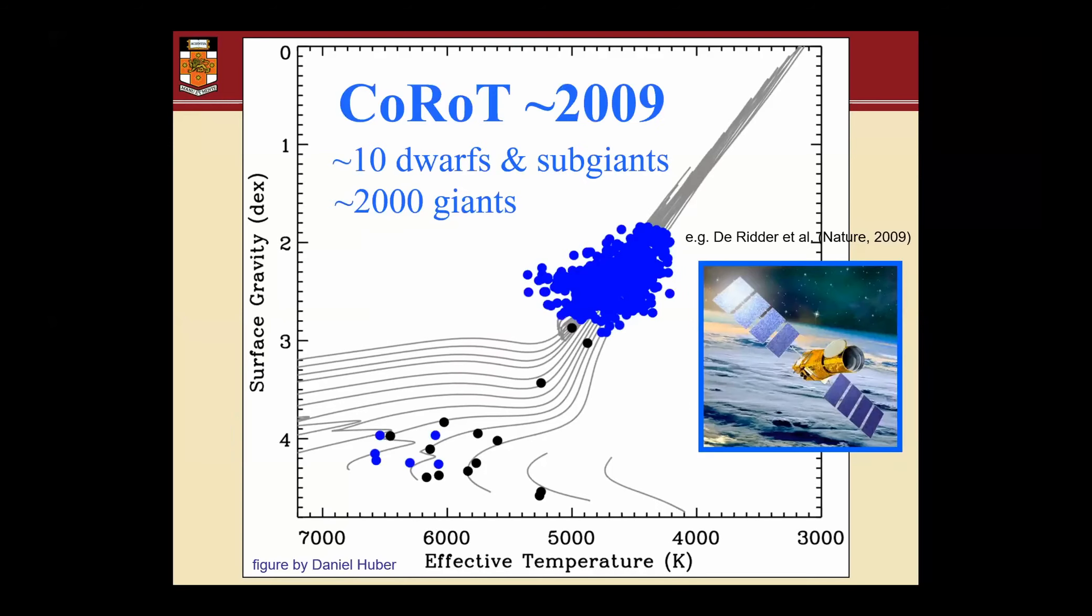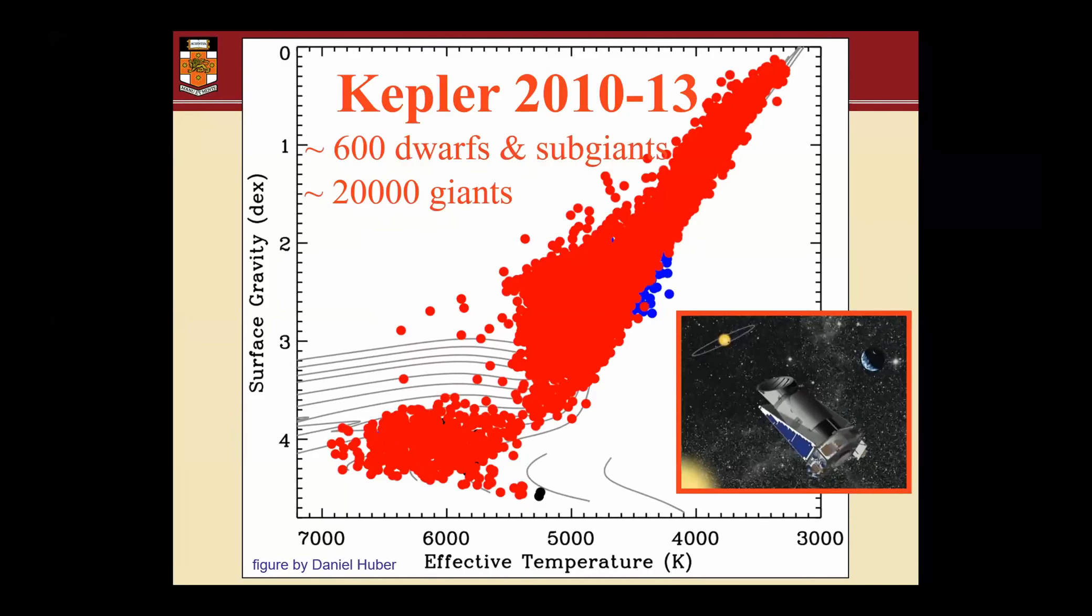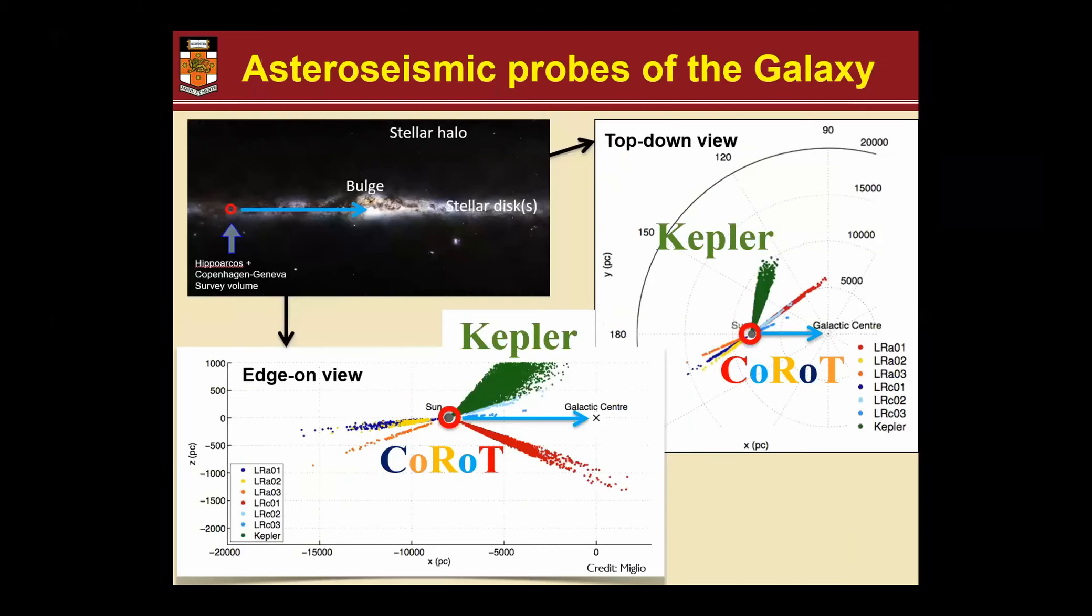Then we got CoRoT and especially Kepler that just filled the whole HR diagram, and in particular red giants - we had from Kepler 20,000 of them. That gave us some opportunities because now we have stars for which we know the distances very well, the masses and the ages, and so we can start to probe into the Milky Way very far away from where we live and start to really dig out what are the different populations in the galaxy. So we do basically galactic archaeology using stars as the age tracers, and this is how far we basically got - about 10 kiloparsecs from the sun.